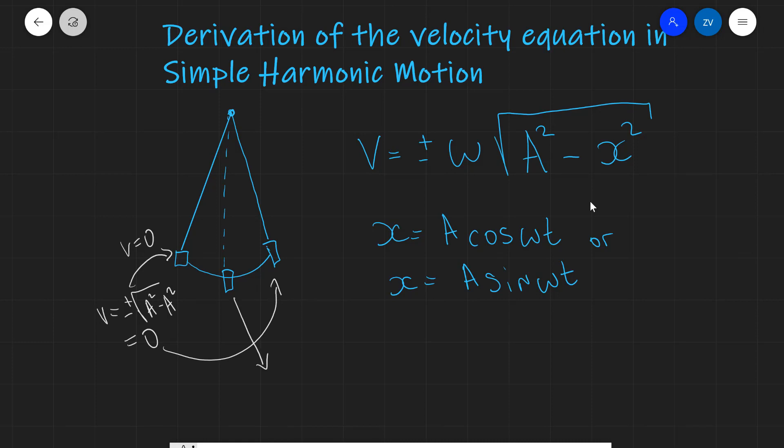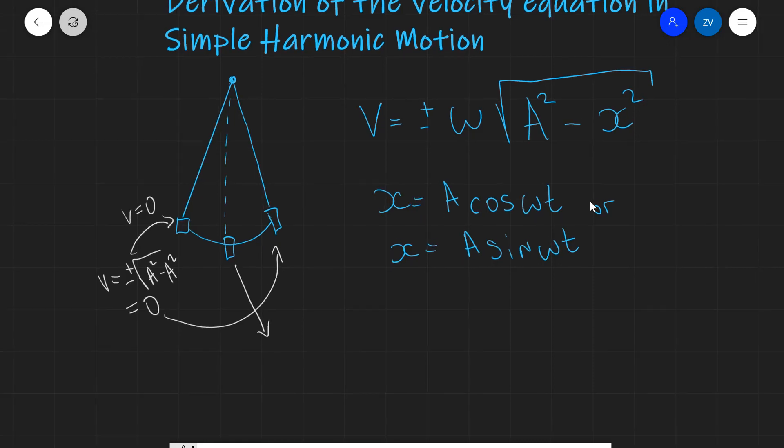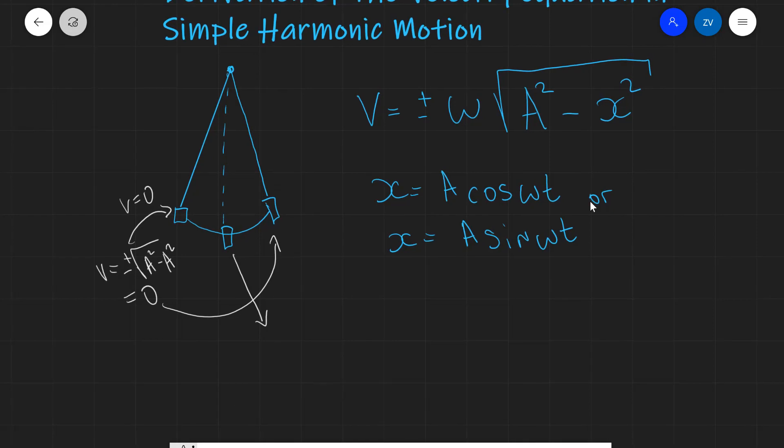The maximum speed of a simple harmonic oscillator will be happening at the equilibrium position. And v max will be equal to plus or minus omega, the square root of A squared, minus zero, which is plus or minus omega A. Okay. So, now that we've recapped this, let's have a go at our derivation.